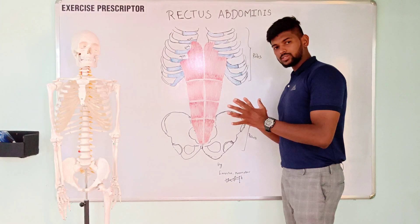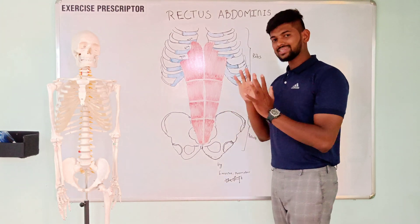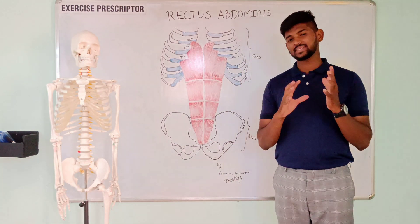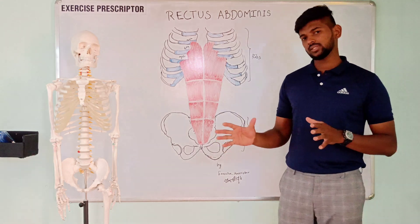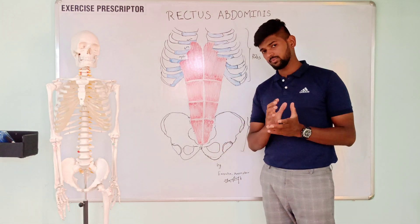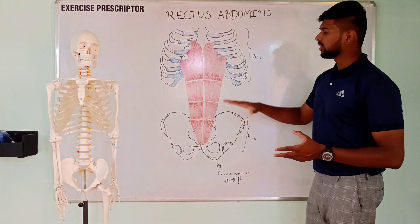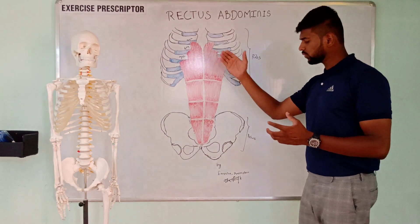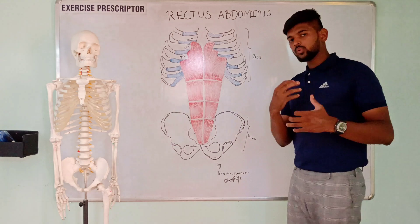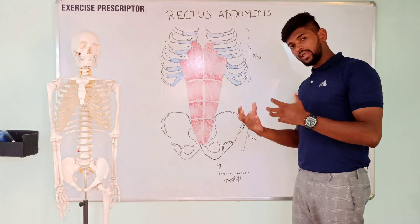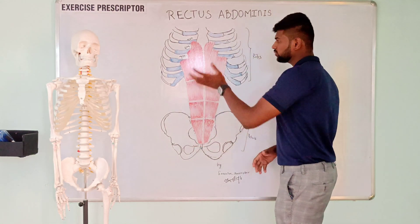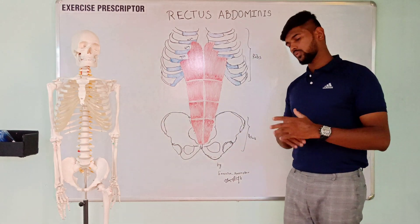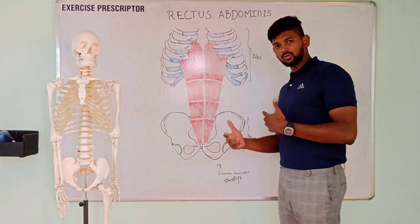We are going to see the movements or concentric action of the rectus abdominis. We will divide the action into standard mover action and reverse mover action. Standard mover action means movement happening from insertion to origin. Reverse mover action means movement happens from origin to insertion.